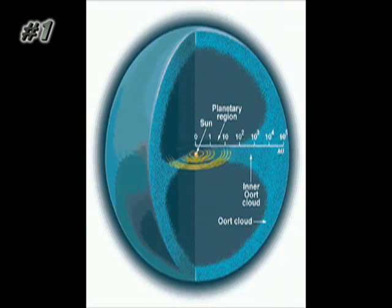So our short period comets go out to about 50 AU. The long period comets go out to about 50,000 AU. And that's the cloud, the distribution of comets that you get from those series of plots of the data.